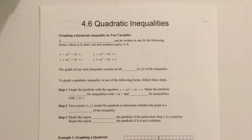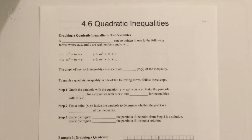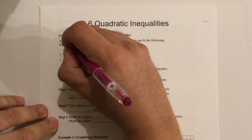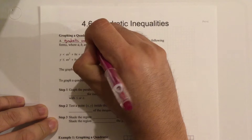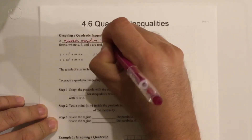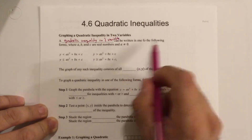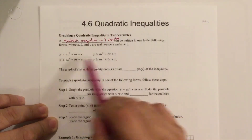This is graphing quadratic inequalities. A quadratic inequality in two variables can be written in one of the following forms, where A, B, and C are real numbers and A does not equal 0. Here we have three parabolas with Y and X.